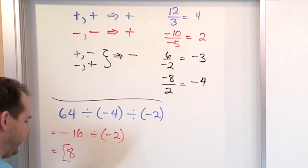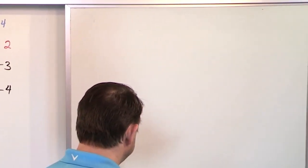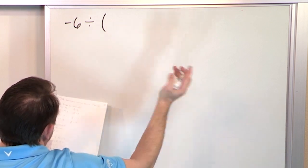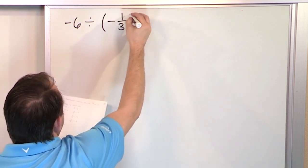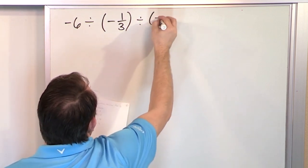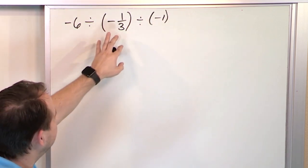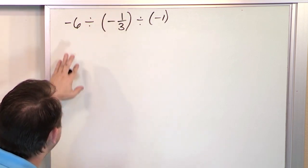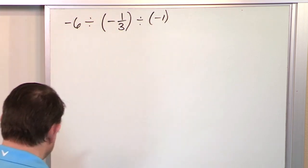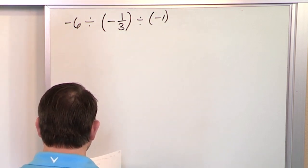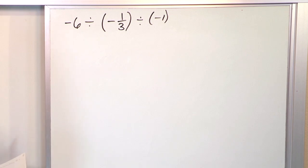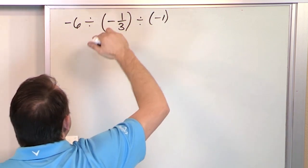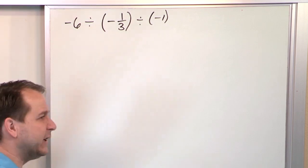Let's increase the problem complexity a little bit. What if we have negative 6 divided by 1, and we divide that by negative 1 third? This is where people start to get confused when fractions are involved. Here we have negative 1 third, and here we have negative 1. You have a negative divided by a negative, so you automatically know you're going to get a positive answer. You need to change division into multiplication, and then flip the second fraction over — a rule we learned way back with fractions.